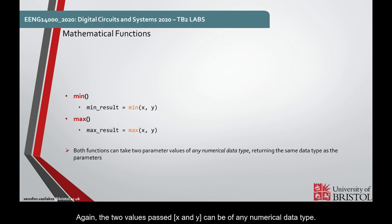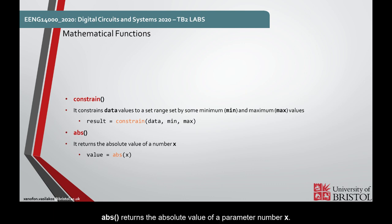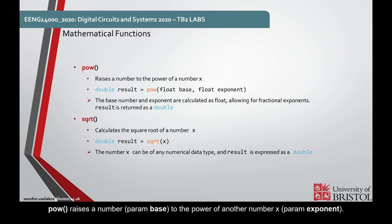Function constrain constrains and returns as a result the value of parameter data to a set range set by some minimum and maximum values. abs returns the absolute value of a parameter number x. pow raises a number, parameter base, to the power of another number x, parameter exponent.